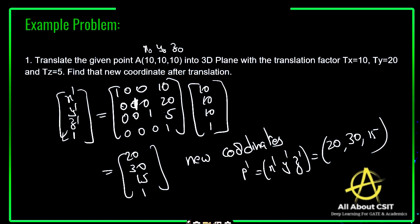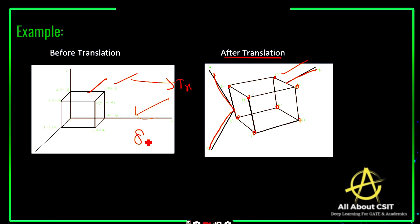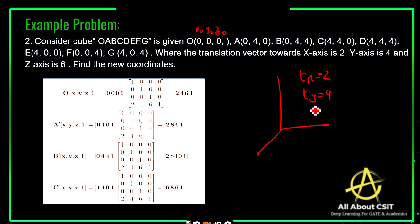Now apply the same technique with another example. I am considering a cube with vertices O, A, B, C, D, E, F, G. The translation vectors are: Tx = 2, Ty = 4, Tz = 6. Apply the translation on the first coordinate. Multiplying the matrix — with all zeros for O and the translation vector Tx, Ty, Tz — you will get O dash = (2, 4, 6, 1). So you get one new coordinate O dash for the cube.